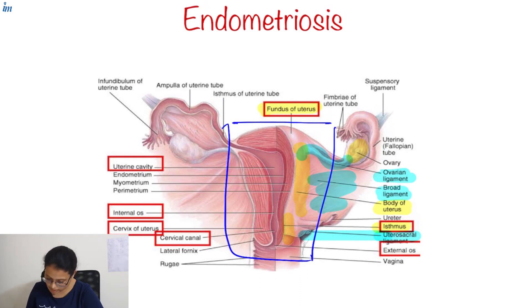Then the uterus is lined by three layers. First one is the outermost layer, this is the perimetrium. And then in the middle we have myometrium, which consists of smooth muscles. And the innermost layer is the endometrium.